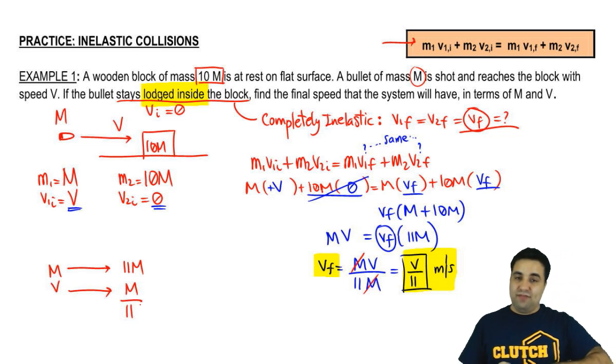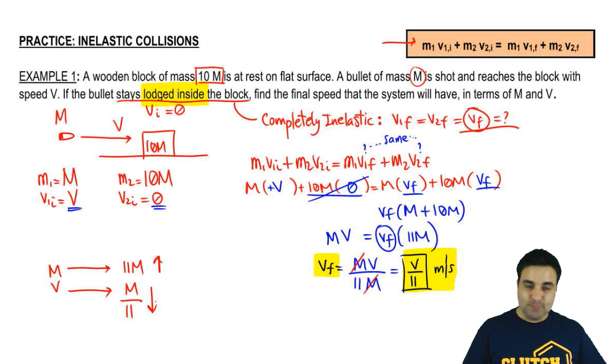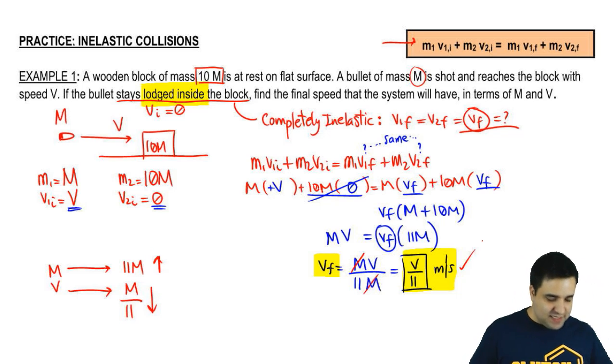The mass grew by a factor of 11 and the velocity got shrunk by a factor of 11. So it's a reverse effect that you got 11 times heavier. Therefore, you got 11 times slower. And that should make sense. That's how it works.